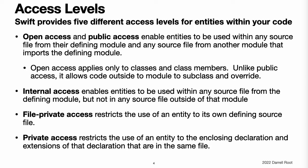Internal access enables entities to be used within any source file from their defining module, but not in any source file outside of that module. You typically use internal access when defining an app's or a framework's internal structure. File private access restricts the use of an entity to its own defining source file. Use file private access to hide the implementation details of a specific piece of functionality when those details are used within an entire file. Private access restricts the use of an entity to the enclosing declaration and to extensions of that declaration that are in the same file.